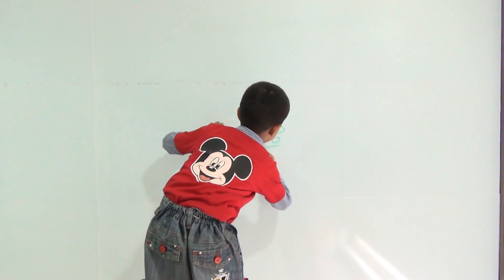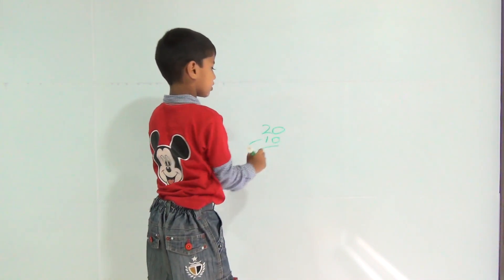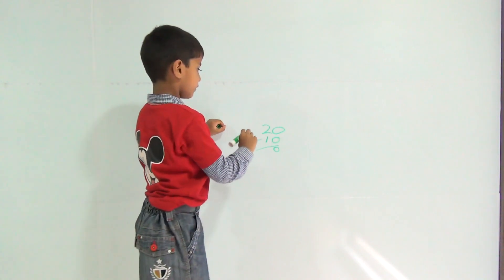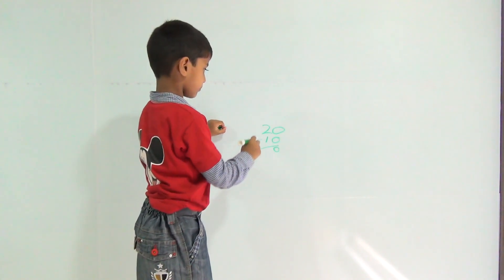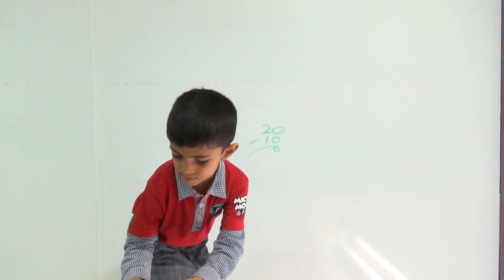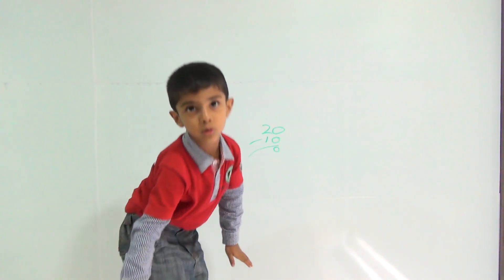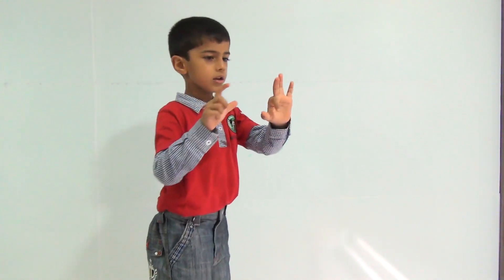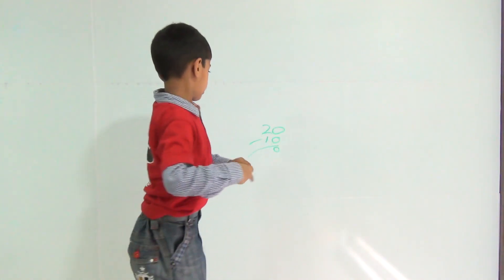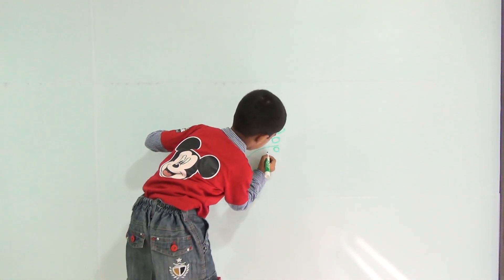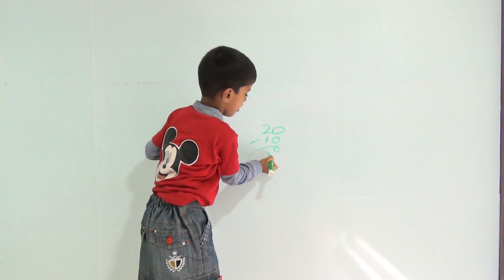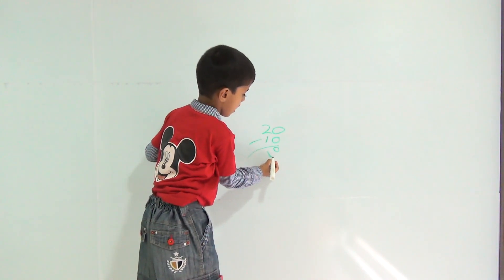0 minus 4 is equal to 0. 2 minus 1. 2 minus 1 is equal to 1. 1 minus 1 is equal to 1. 2 minus 1 is 1.